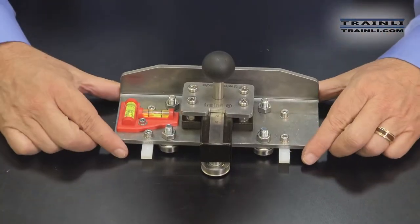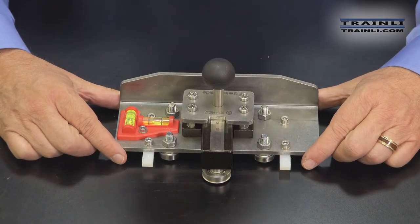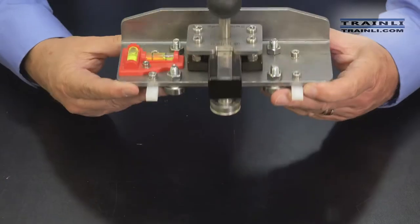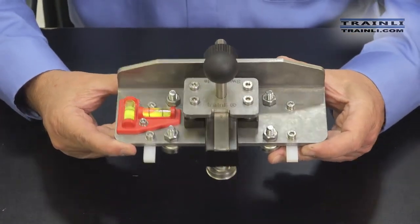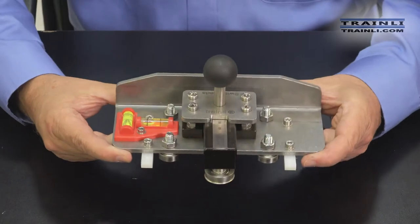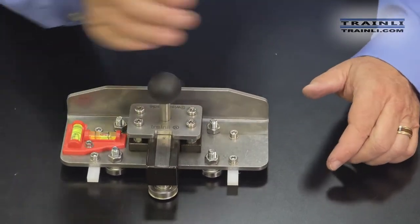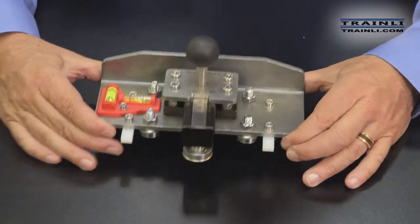Let's take a little bit closer look at this dual railbender. It comes with the two levels, so you can keep track of your side-to-side on your track, as well as your grade up and down. This is the handle that you use to slide it back and forth across the track, up and down the rails as you're bending it.